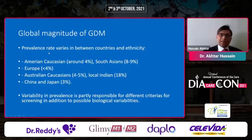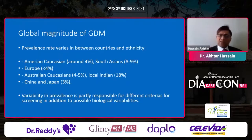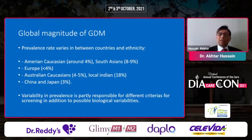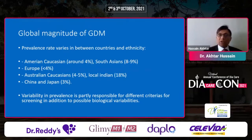The global magnitude of diabetes varies by ethnicity, and this is critically important. The risk of GDM is not the same across all populations, so we need specific measures and specific diagnostic criteria by ethnicity. For example, South Asians have rates of eight to nine percent, but studies from India show figures as high as 18 percent — a huge difference. Meanwhile, Chinese and Japanese populations are around three percent.